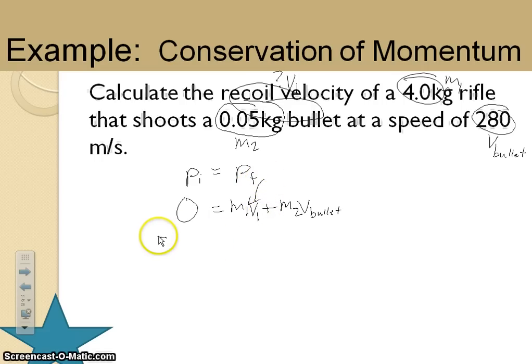In other words, let me go ahead and subtract my M2V bullet from either side. That gives me negative M2V bullet on this side equal to the mass of my rifle times the velocity of my rifle. That's my recoil velocity that I'm looking for.